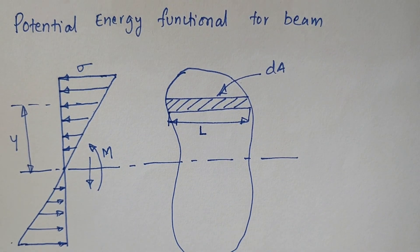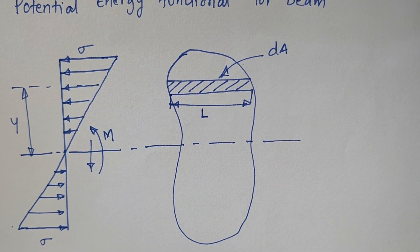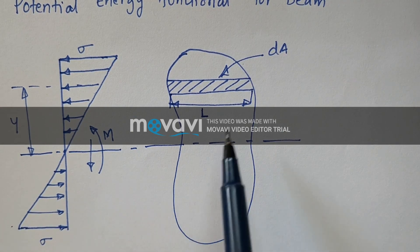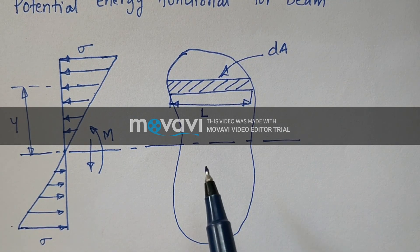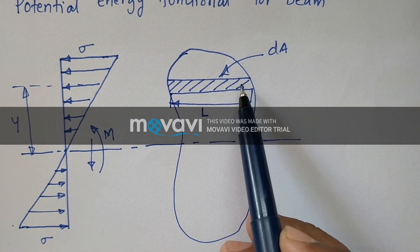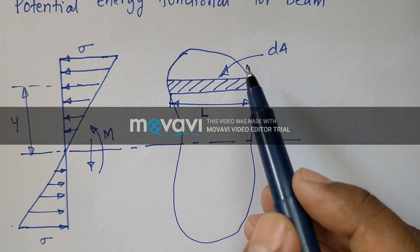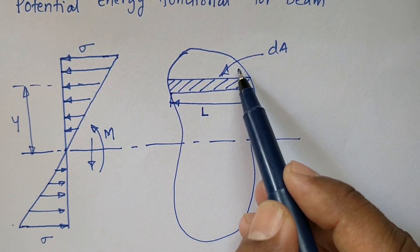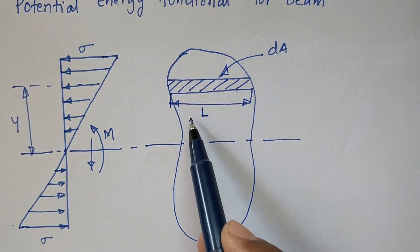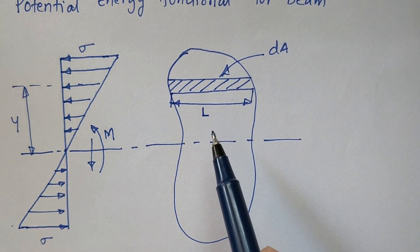This is a beam element given. The bending stresses and bending moment are shown clearly. This is a small element which is considered for analysis. That small elemental area can be treated as dA and the small elemental length can be treated as dL for the given element.